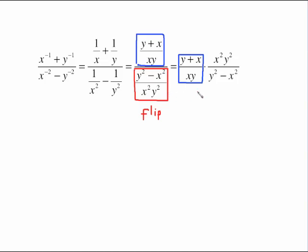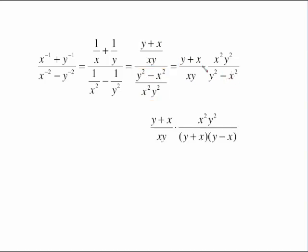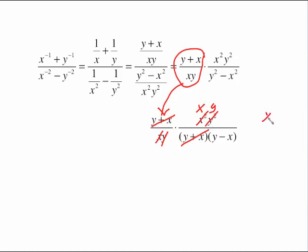Now I have a single fraction over a single fraction, so I can take the bottom and flip it upside down. The numerator stays unchanged; this is the bottom flipped upside down. Now y squared minus x squared factors. Those y plus x binomials are identical and cancel out. With the monomials, using exponent laws: x squared over x leaves an x in the top, and y squared over y leaves a y in the top. So all I have in the top is xy, and what's left in the bottom is y minus x.